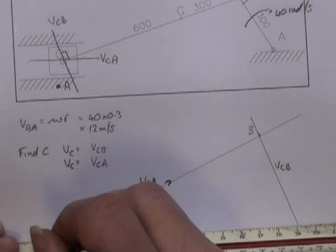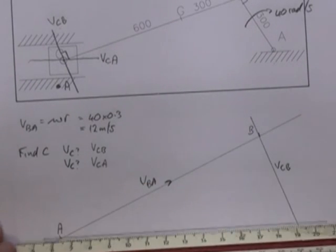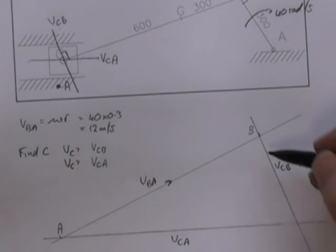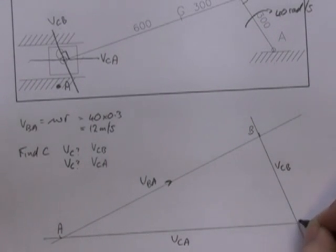And I also know CA will be a horizontal line through here. So I can put through A through here. So this is VCA. C must be on this line, and C must be on this line. So this point here where these two cross must be point C.